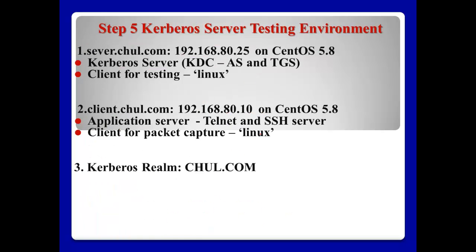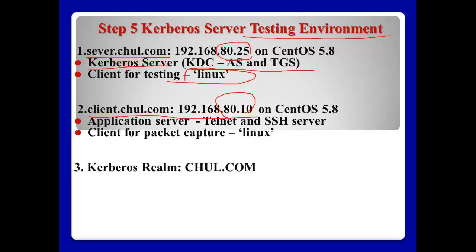In my case, there are two systems for the testing environment. Server churn.com has IP address 8025 and will be the cover server — meaning AS and TGS. For the user and the client, churn.com has IP address 8010, and this will be used as an application server such as Telnet and SSH. I also use Linux for testing packet captures on Wireshark. In this video, I will use the cover realm churn.com.